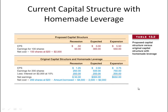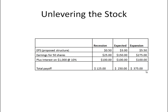What Modigliani and Miller showed is that it doesn't actually matter — you can create your own leverage. If a firm is not using leverage and you would like them to, you can borrow money yourself and buy additional shares. What if the firm is using leverage and you don't like it? You can do the opposite: you can unlever your portfolio.